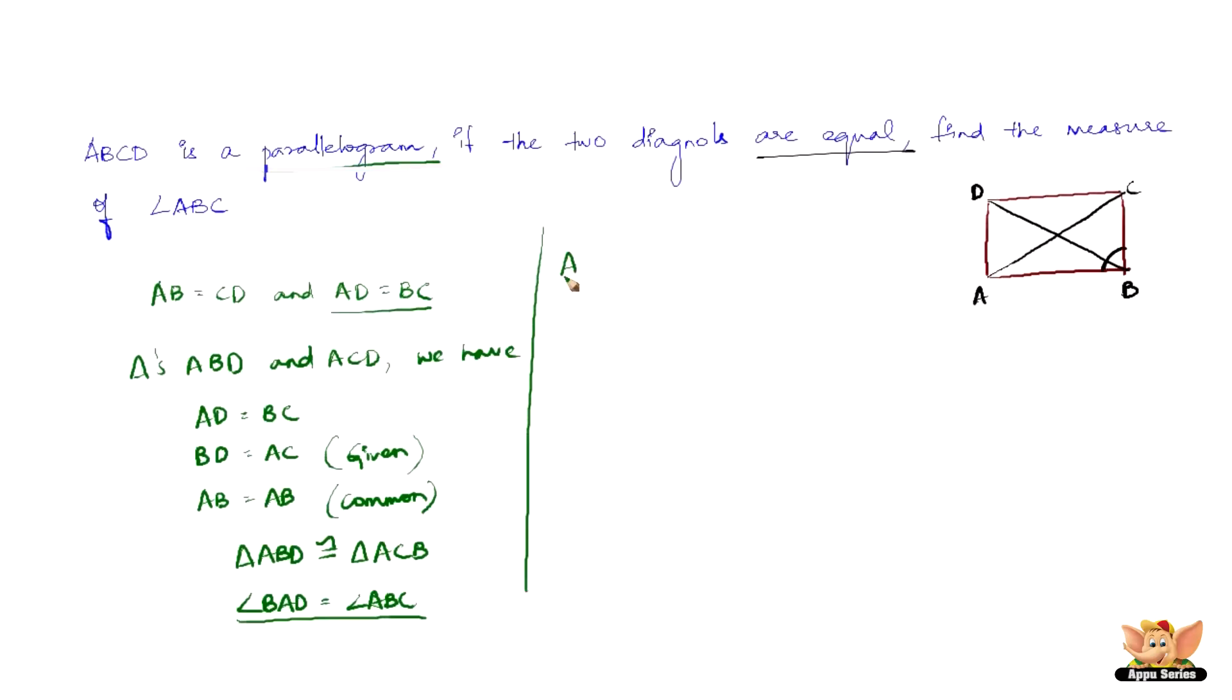we know that AD is parallel to BC and transversal AB intersects them at A and B respectively. So therefore, we have angle BAD plus angle ABC equal to 180 degrees.